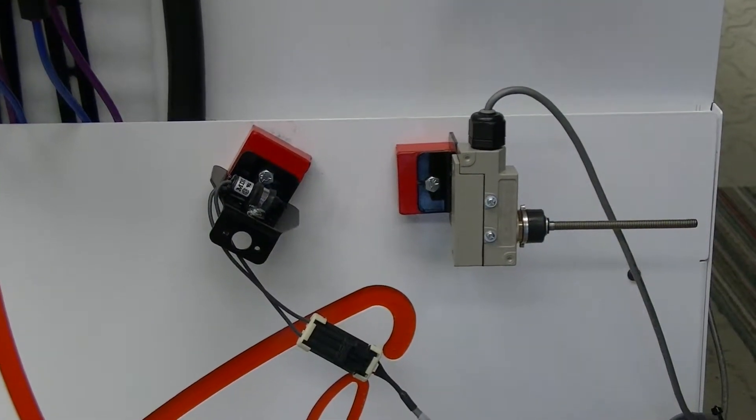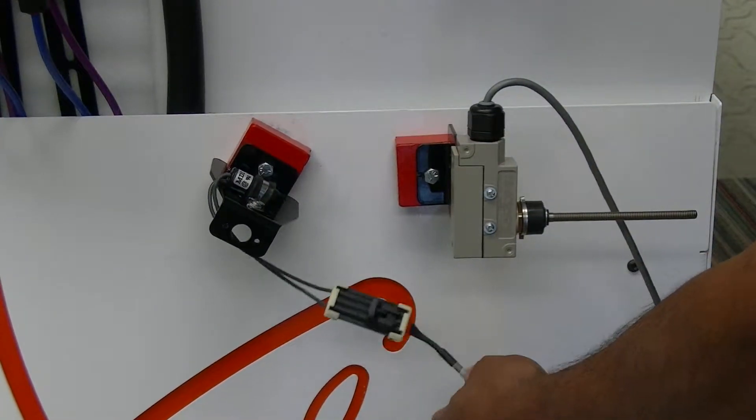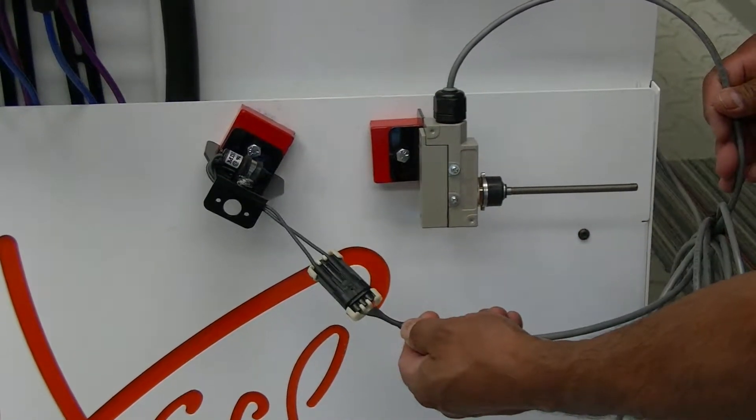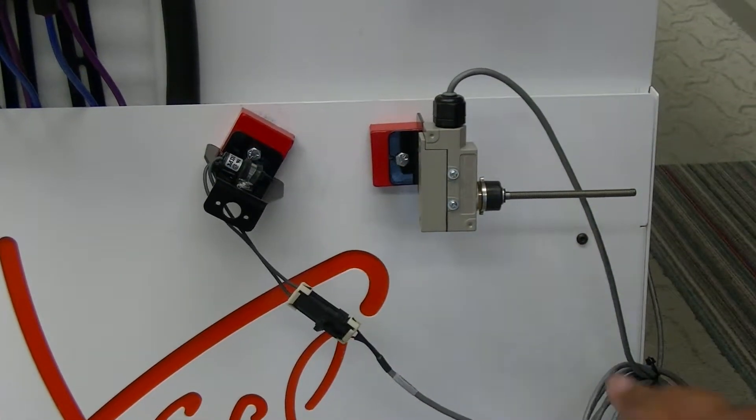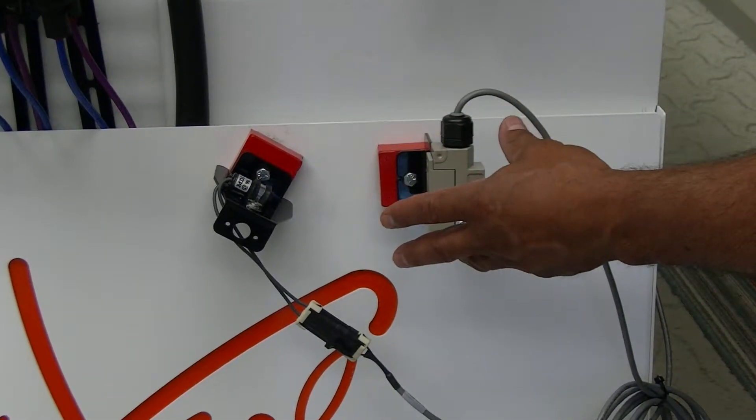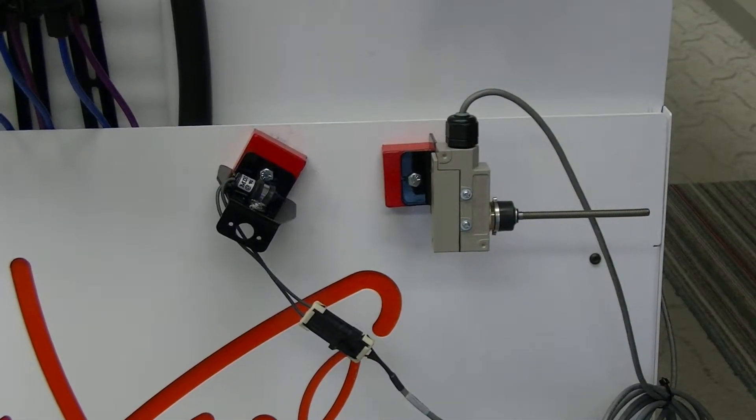Very simple to hook up, same connectors, the three-pin weather pack, and we're only using two wires on it. So those are the two differences between the implement switches and what environments you should and should not use them in.